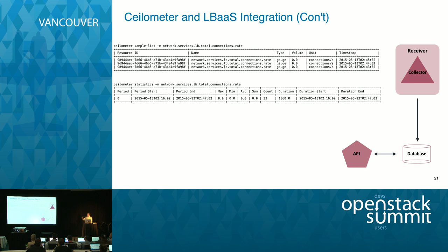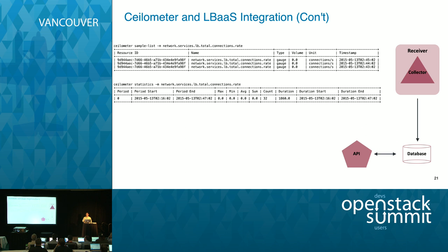By the end we have a new meter called 'total_connections.rate'. The collector service on the messaging bus retrieves the raw data and saves a copy to the database or file, making it available through the Ceilometer API. If you issue a 'ceilometer sample-list' command, you'll now see this new meter appearing in the output — the type, unit, and frequency as defined in your pipeline YAML file. Since we just started a load balancer, the value will be 0.